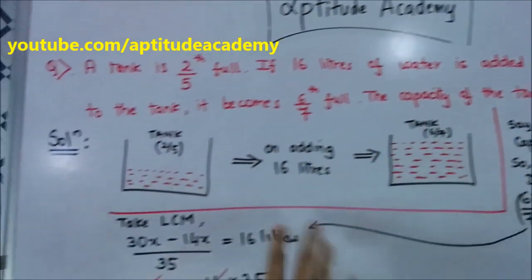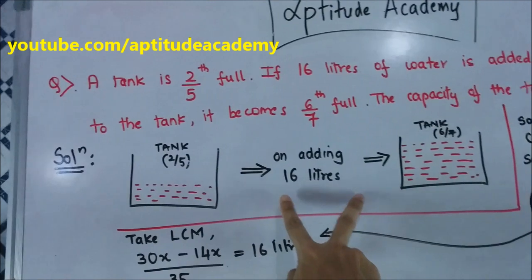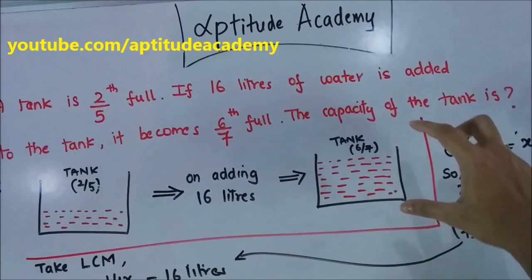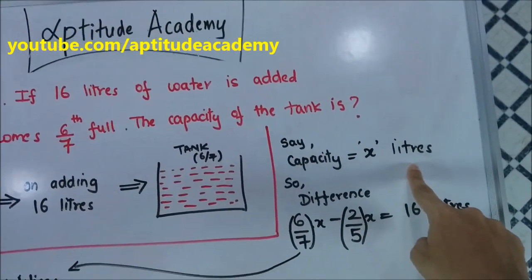The capacity of the tank is 2 by 5. Now on adding 16 liters, it gets filled to 6 by 7th of its total capacity. Now let us say that the capacity of the tank is x liters.